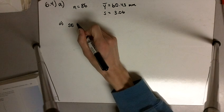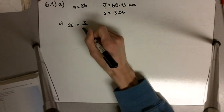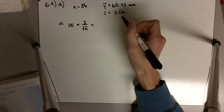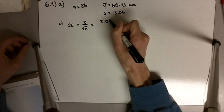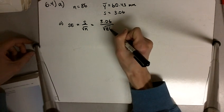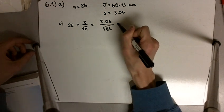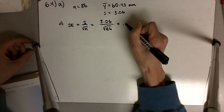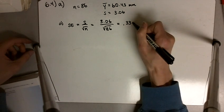So in this case, our standard error is s divided by the square root of n, so that is going to be 3.06 divided by the square root of 86. And when you do that calculation, you get 0.33 millimeters.